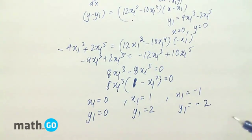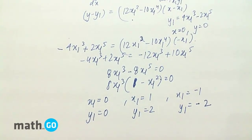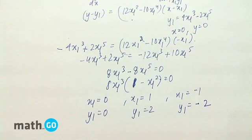Hence these are the points on the curve at which the tangent passes through the origin: (0, 0), (1, 2), and (−1, −2).